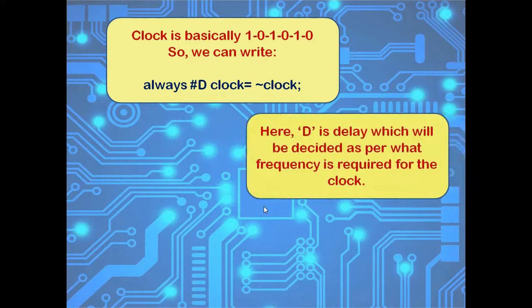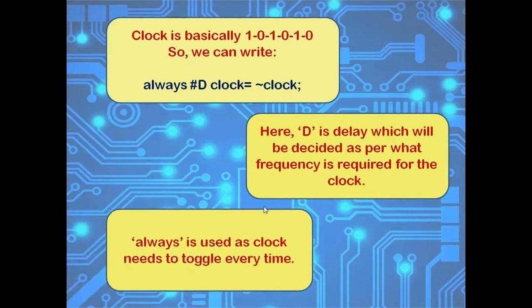What's the value D here? And why we have used always? D is the delay which we have to decide by seeing what's the frequency of clock we need to generate. Always we have used because clock needs to get toggled every time.